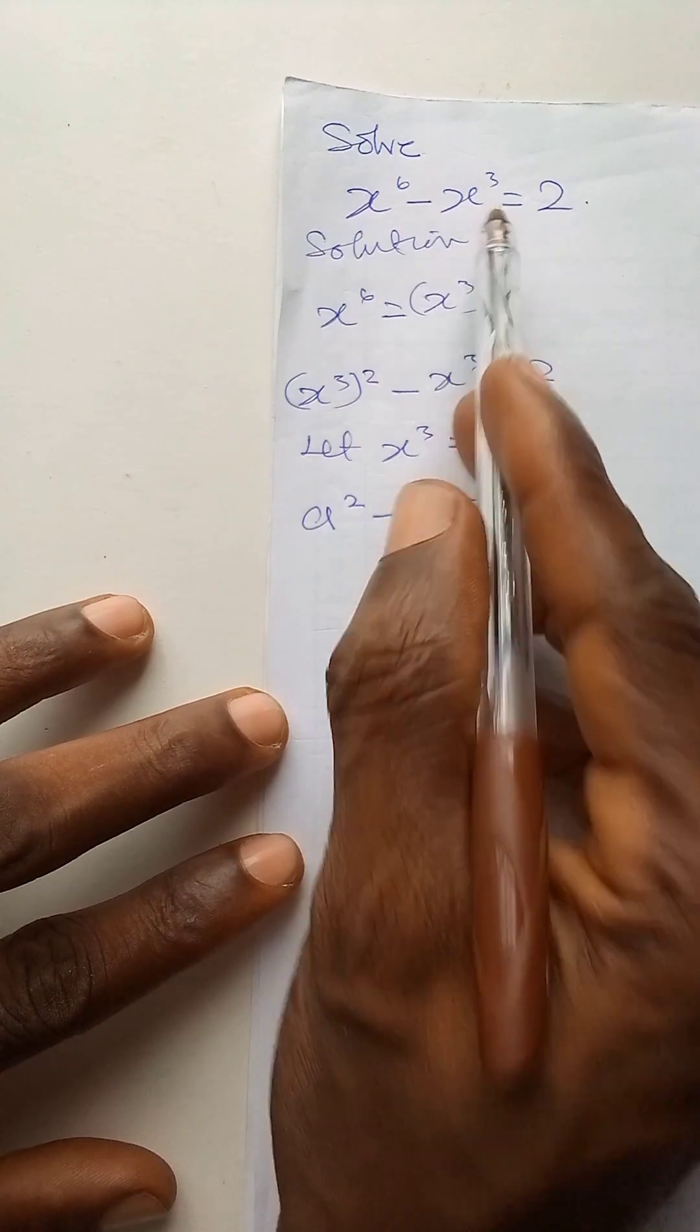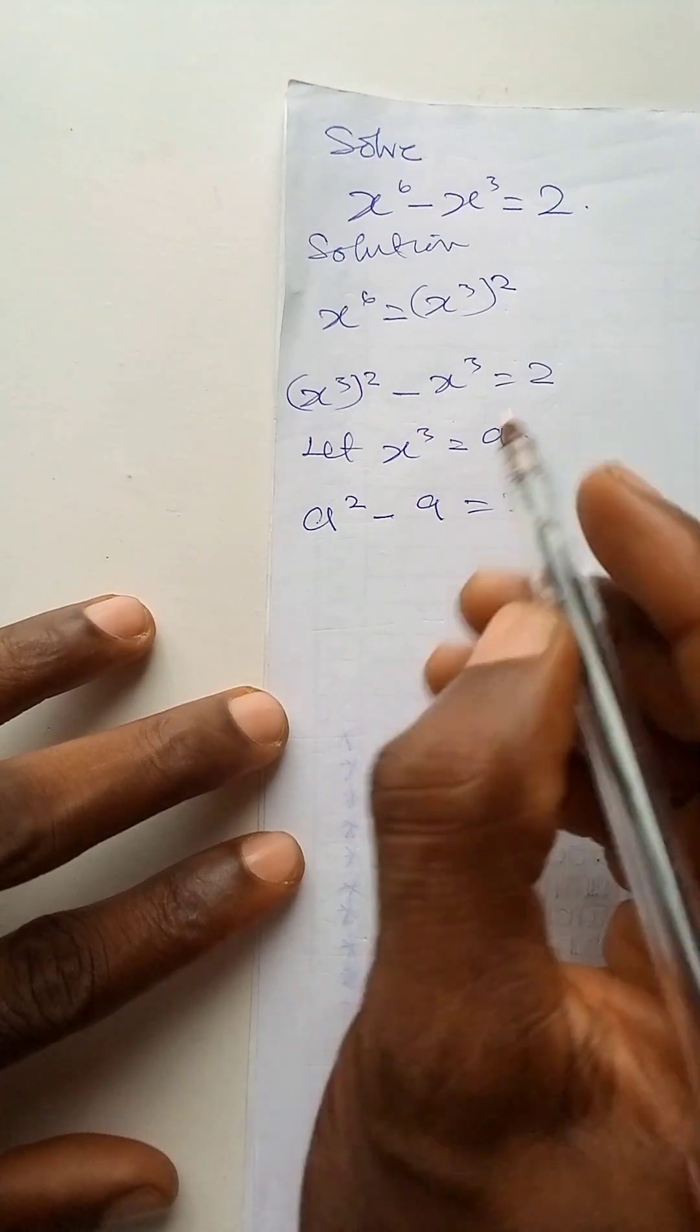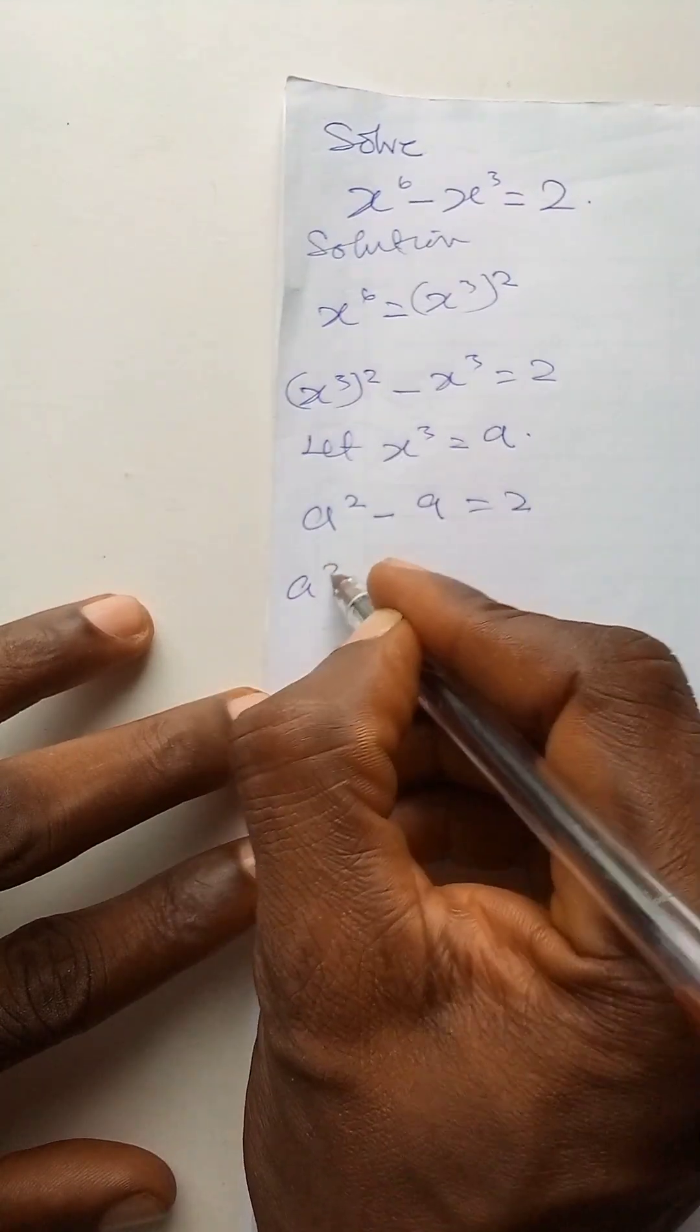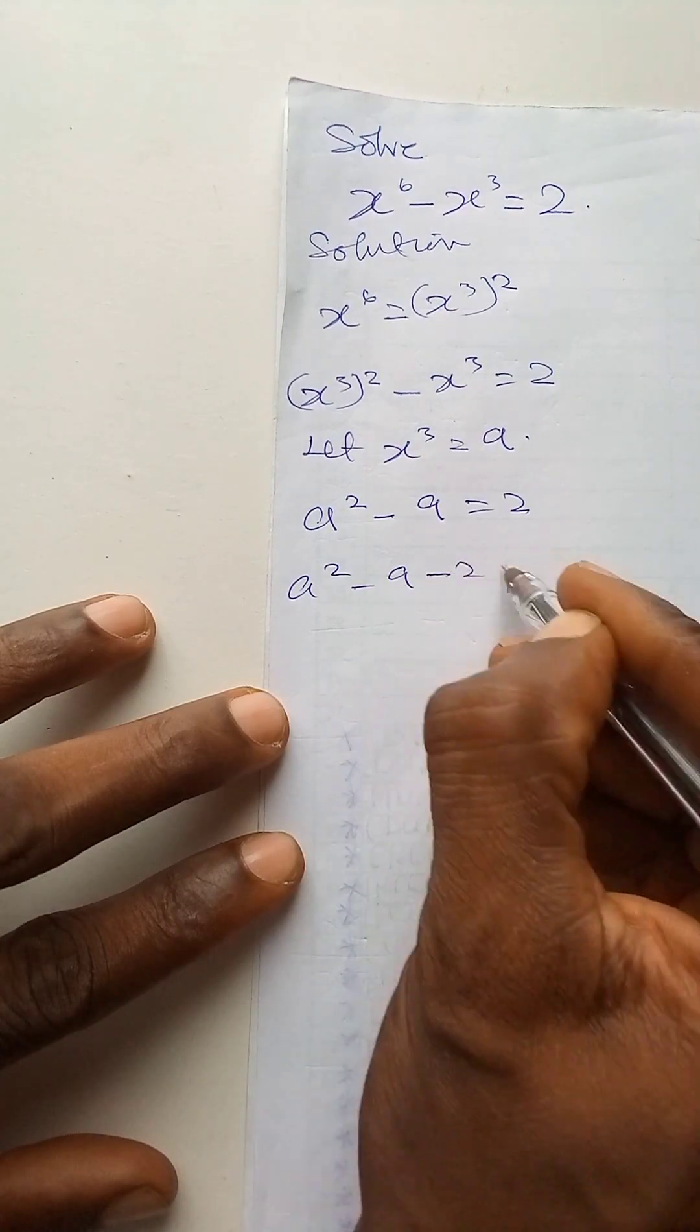We have reduced this now to this quadratic equation. So simplifying, a to power 2 minus a minus 2 is equal to 0.